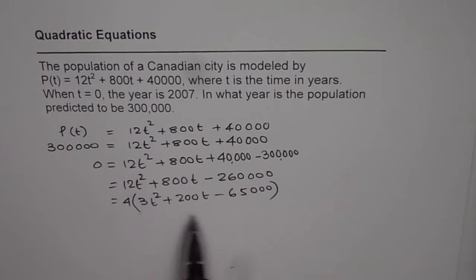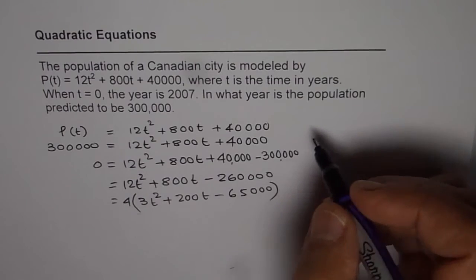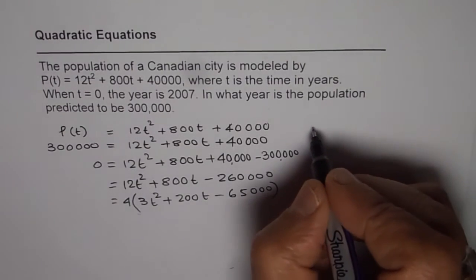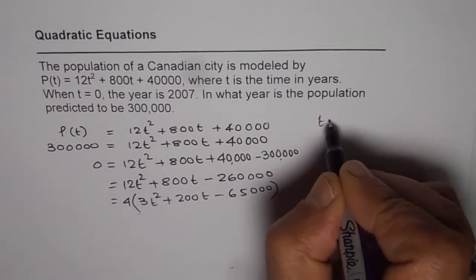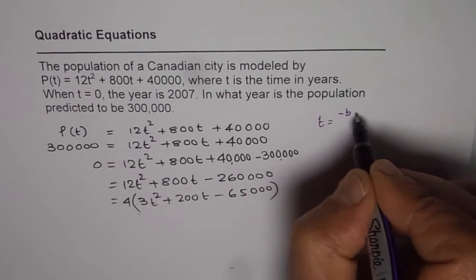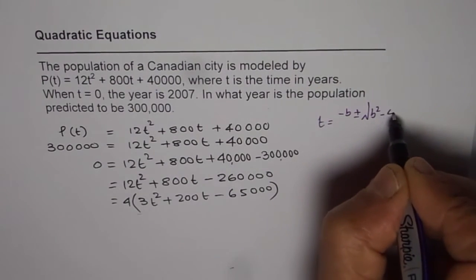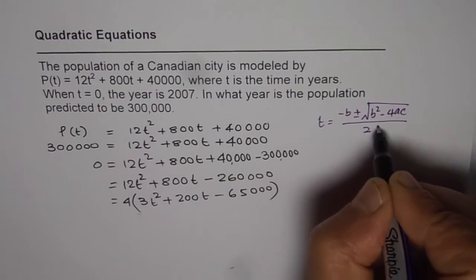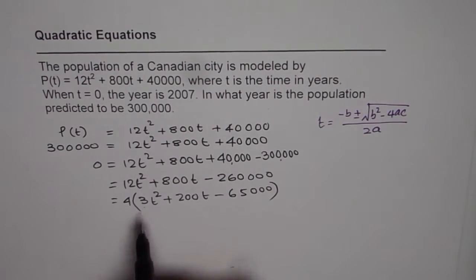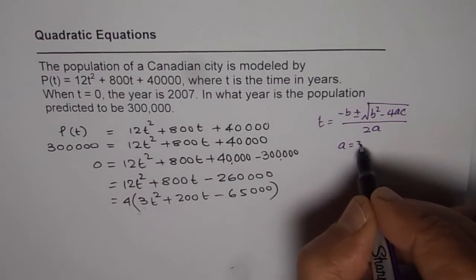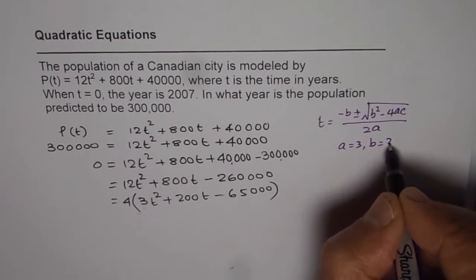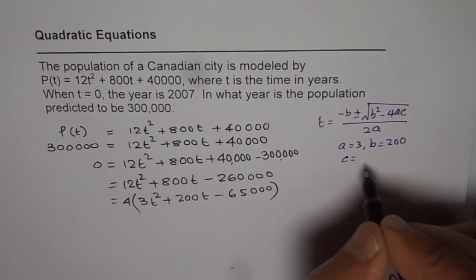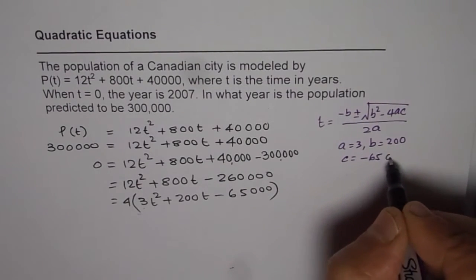Now, to solve this, it is good to use quadratic formula. So we know what the quadratic formula is. To find the value, this time it is t, the quadratic formula will be -b ± √(b² - 4ac) divided by 2a. Now here, a = 3 for us, b = 200, and c = -65,000.